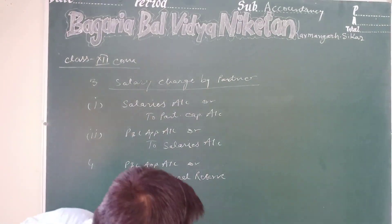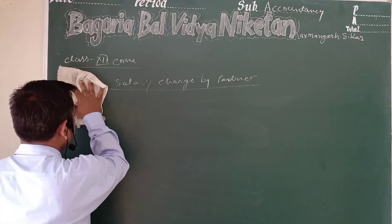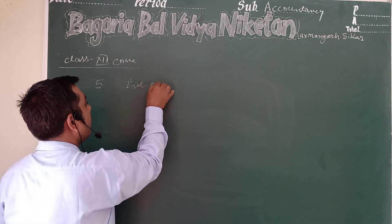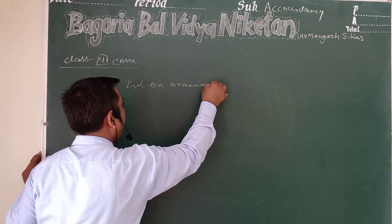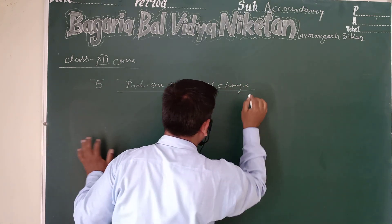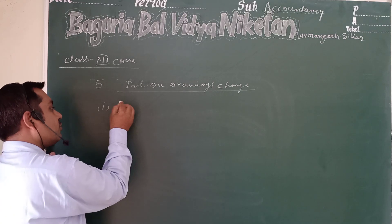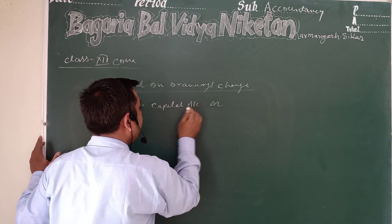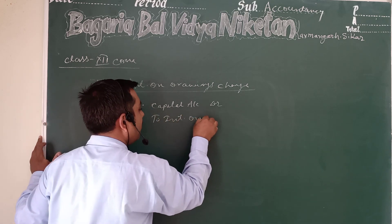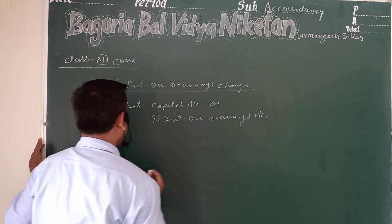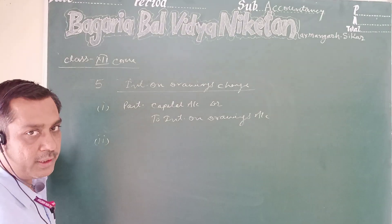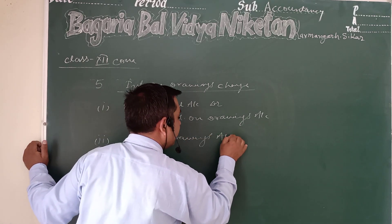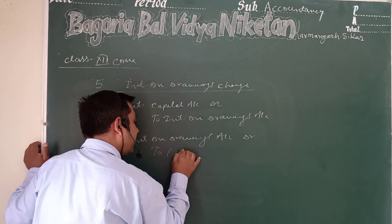The fifth entry is for interest on drawings. When interest on drawings is charged, the first entry is: Partners' Capital Account debit to Interest on Drawings Account. The second entry transfers interest on drawings to the Profit and Loss Appropriation Account: Interest on Drawings Account debit to Profit and Loss Appropriation Account.